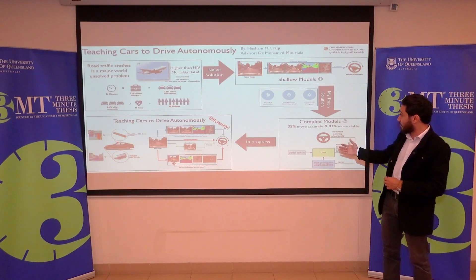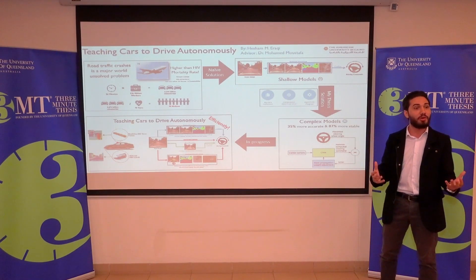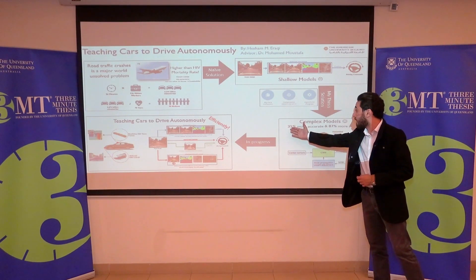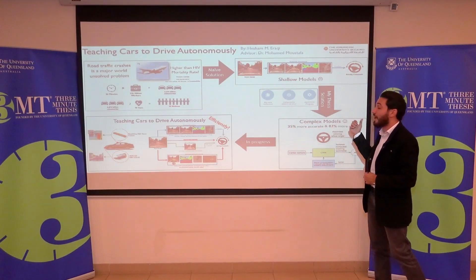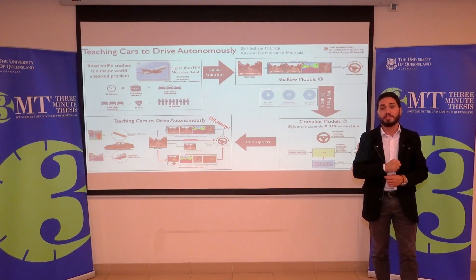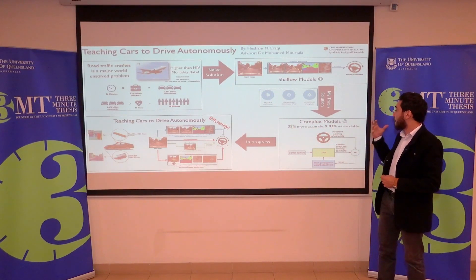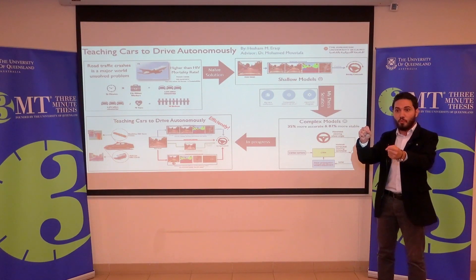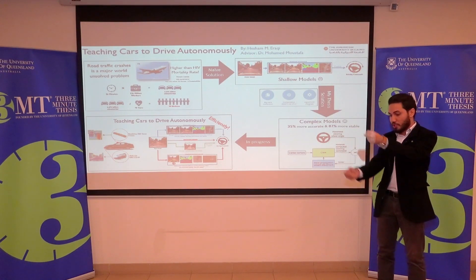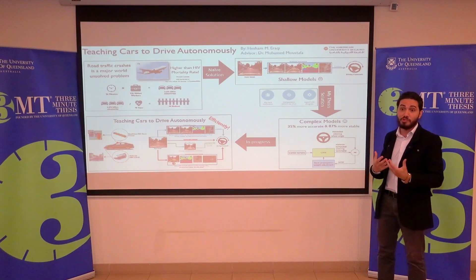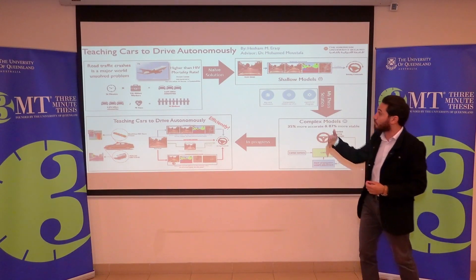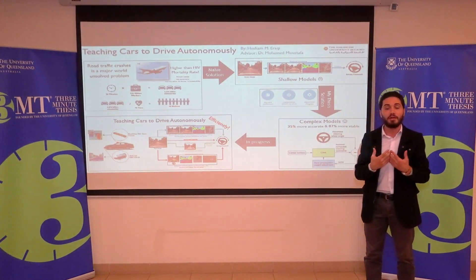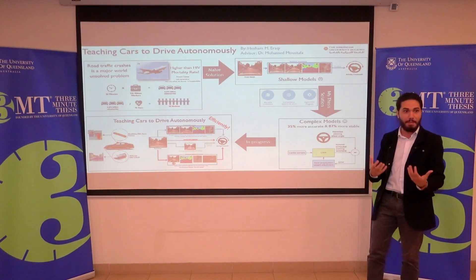We published our method in the top AI conference in the world, and we were able to improve the state of the art by 35% in accuracy and 87% in stability. However, our method was not able to determine at intersections which direction to go, because it was not connected to a map. This is what we are doing today — improving the method by adding a map.